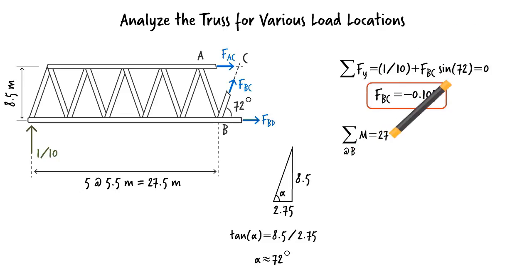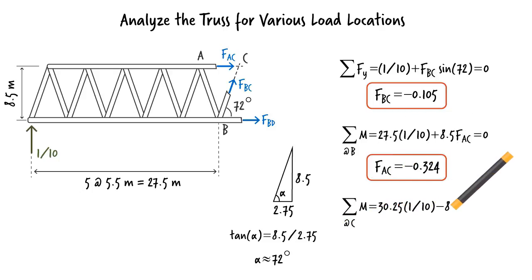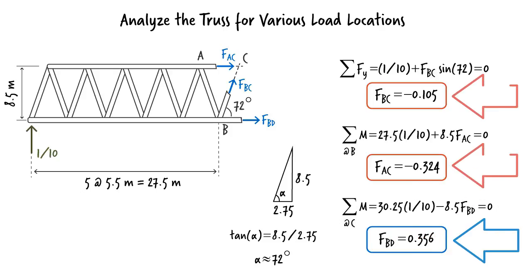Then, writing the sum of the moments about joint B, we can determine FAC. Finally, summing the moments about joint C yields FBD. We have one member in tension and two members in compression.